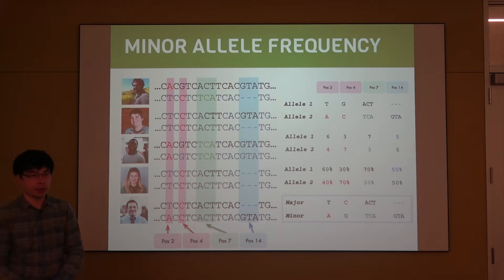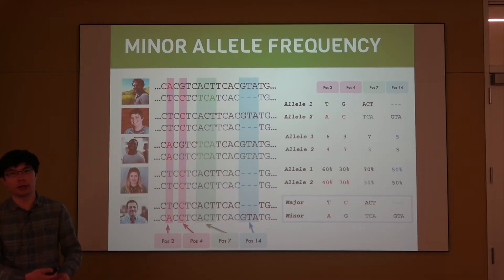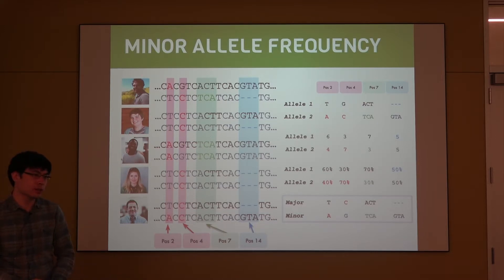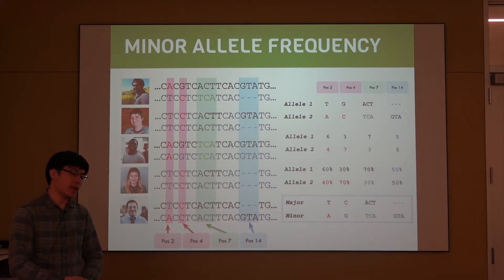For EQTL analysis, we usually use populations and population cohorts, meaning we gather a large number of individuals — usually in the hundreds to thousands, sometimes hundreds of thousands — and look at their allele frequencies.